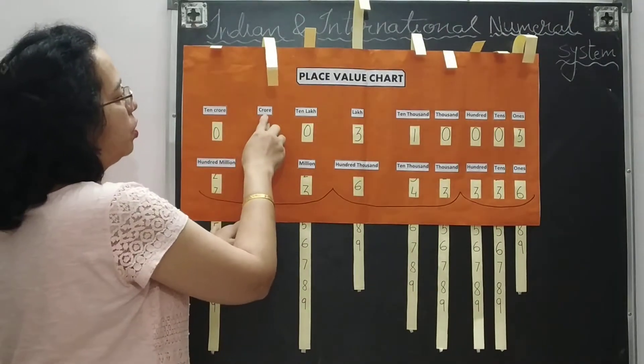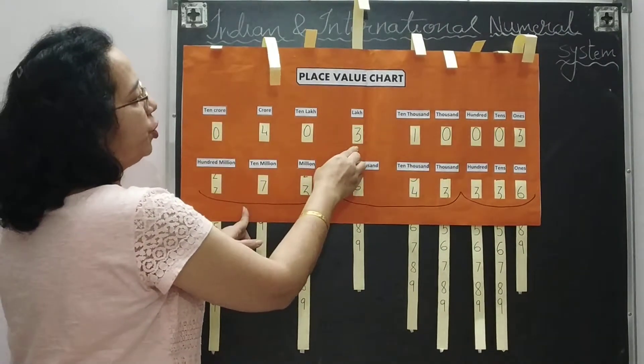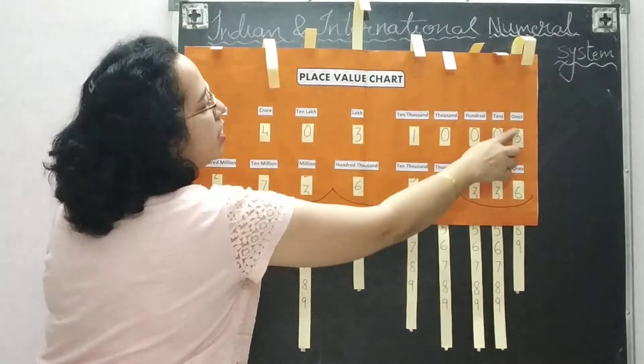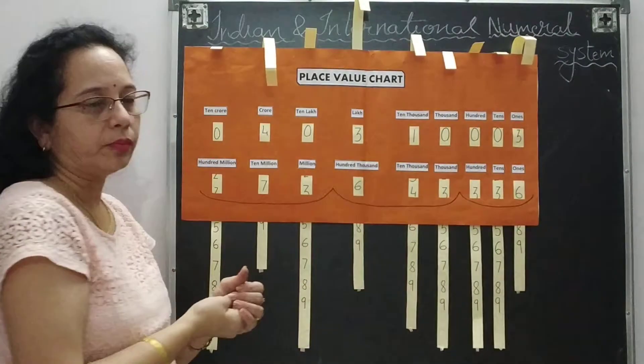So finally, how do we read this number? Four crore, three lakh, ten thousand and three — that is 4,03,10,003.